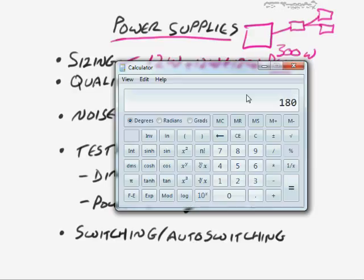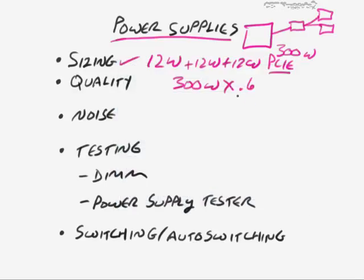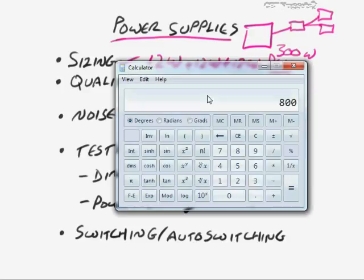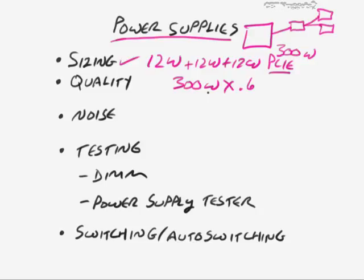So 300 watts times 0.6 equals 180 watts — meaning you can only safely use about 180 watts out of a 300-watt supply. If I got an 800-watt power supply, 800 times 0.6 equals 480 watts available safely. Running a power supply at maximum capacity makes it run much hotter — it usually has one or two fans, and that's going to put out a lot of heat, which is always bad in computing.